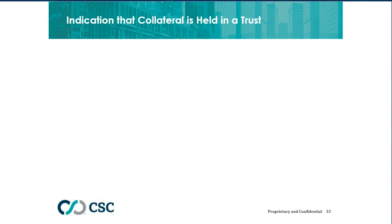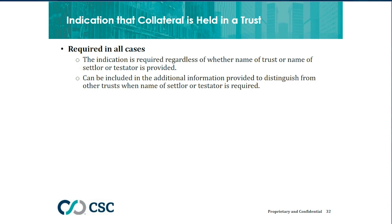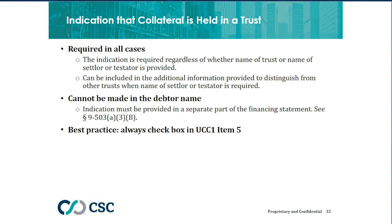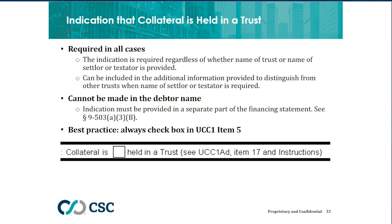The financing statement must also indicate that the collateral is held in a trust. That indication is required regardless of the type of name provided, and it must be made in a separate part of the financing statement — not in the debtor name field. Technically, even if the name says 'the ABC Trust,' that's not a sufficient indication. Best practice: always use the checkbox in Item 5 of the UCC-1 form or its electronic equivalent to indicate that the collateral is held in a trust.